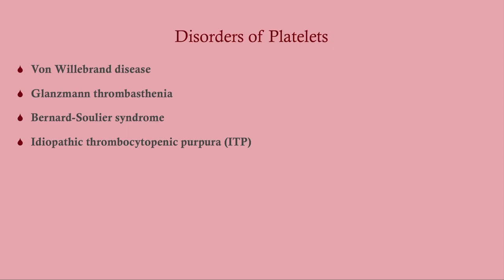We're going to talk about Von Willebrand's disease — as you can imagine, that's the most common — then Glanzmann's thrombasthenia, Bernard-Soulier syndrome, and then ITP, which is also fairly common.